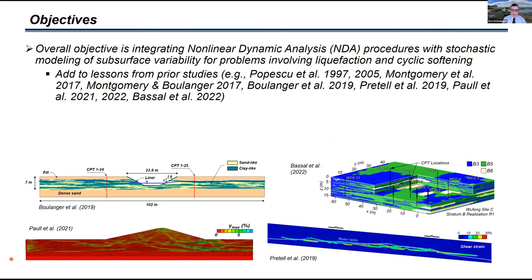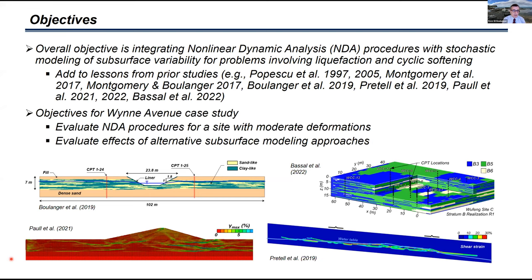This particular story is part of an overall objective at integrating nonlinear dynamic analyses, which we'll call NDA procedures, with stochastic models of the subsurface variability for problems involving liquefaction and cyclic softening. We're trying to add the lessons from a number of prior studies and build up some experience with these tools. The specific objectives for the Wynn Avenue case study are to evaluate these procedures for a site where we have moderate deformations, and then evaluate the effects of alternative subsurface modeling approaches and see how sensitive results are to these details.